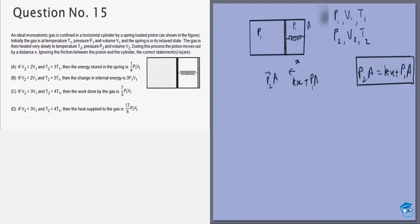Now we are given each option we will have to check separately. So let's look at option A. In option A we are given that V2 is equal to 2V1 and T2 is equal to 3T1. So since the number of moles will remain constant, P1V1 by T1 is equal to P2 into 2V1 by 3T1, which gives me P2 is equal to 3 by 2 P1, and we need to find the energy stored in the spring.